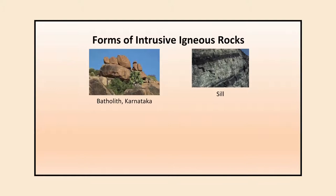There are two types of intrusive igneous rocks: plutonic rocks, which are deep-seated, and hypabyssal rocks, found at shallow depths. In the pictures you can see different forms: batholiths are dome-shaped, sills show horizontal banding of dark-colored igneous rocks intruded into existing rocks, and dikes are vertical dark-colored igneous rocks formed when lava intruded into existing rock.